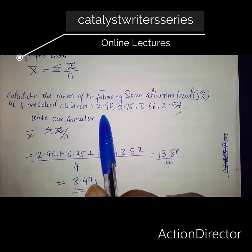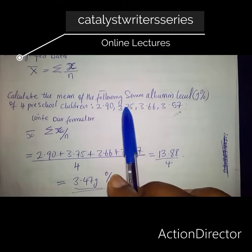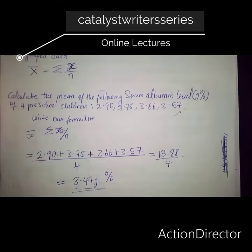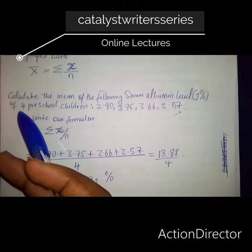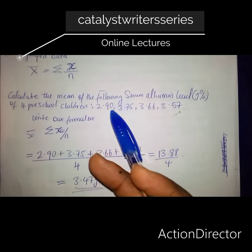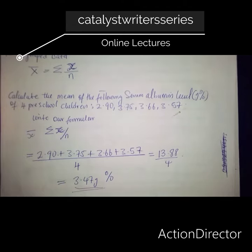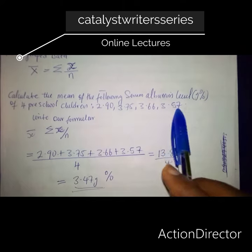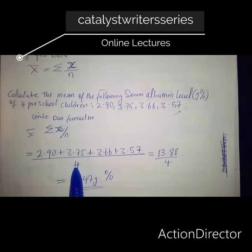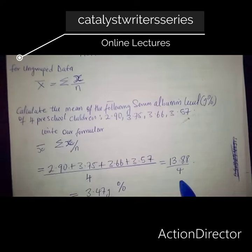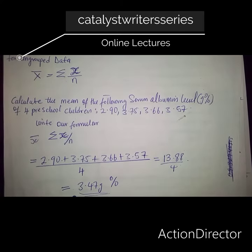The number of occurrences is 1, 2, 3, 4 — that is the number of values for 4 children, so n equals 4. We divide 13.88 by 4, which gives us 13.47 grams.